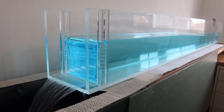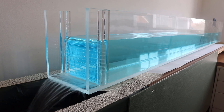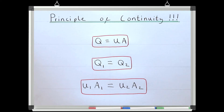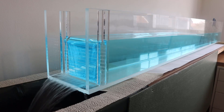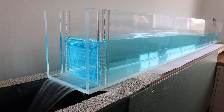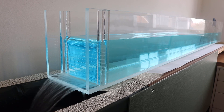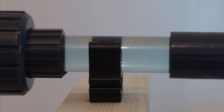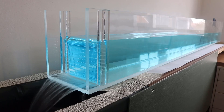So for open channel flows, if the flow is steady, we know the discharge must be the same at every point in the system, and therefore we can use the continuity equation. However, the big difference between open channel flow and pipe flow is that the discharge does not necessarily need to be the same at every point in an open channel flow. You can have cases where the discharge is different at different points in the system for an open channel.